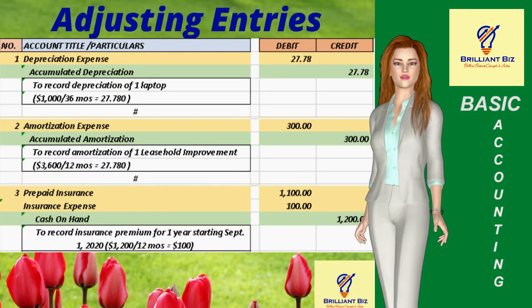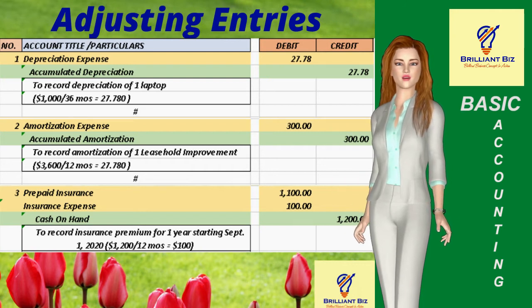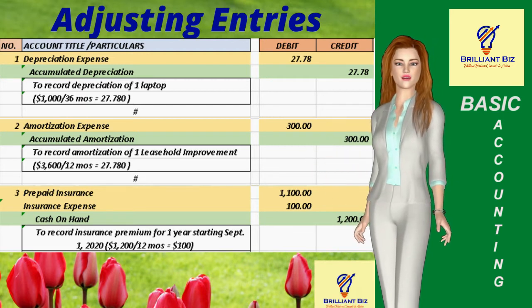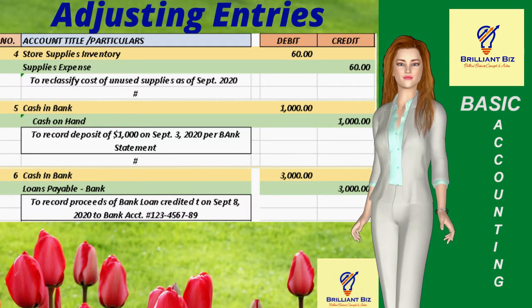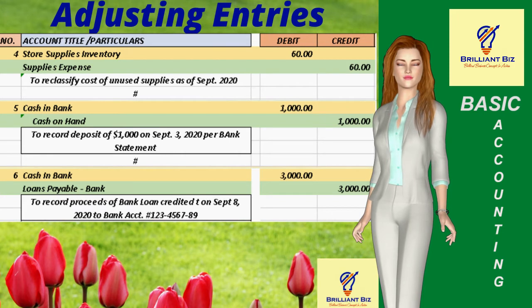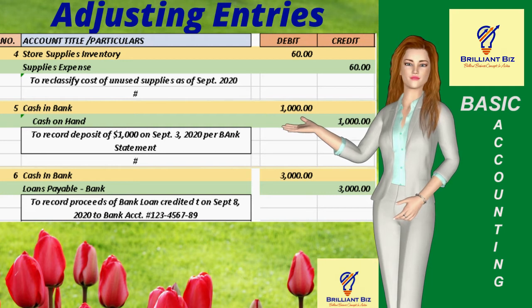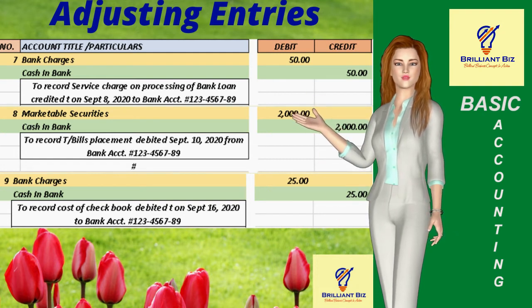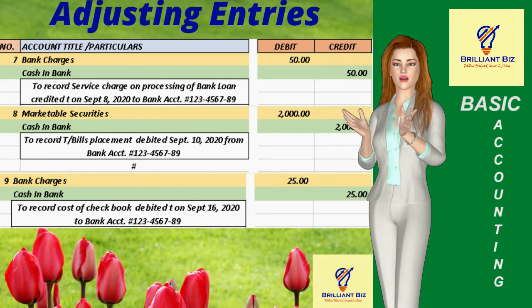The following are the adjusting entries that we have prepared, inclusive of the book reconciling items identified after preparing the bank reconciliation statement covering September 1–30, 2020 transactions. Number 1 to record depreciation expense for the laptop; number 2 to record amortization expense for leasehold improvement; number 3 to record insurance premium for one year starting September 1, 2020; number 4 to record unused store supplies at the end of the month; number 5 to record deposit of $1,000 dated September 3 per bank statement.